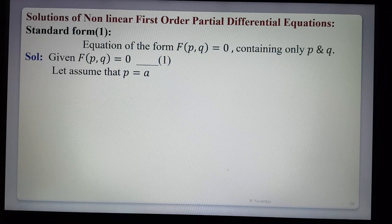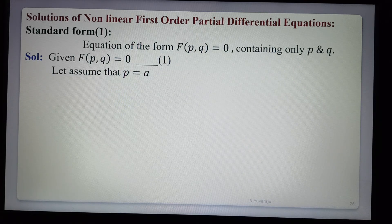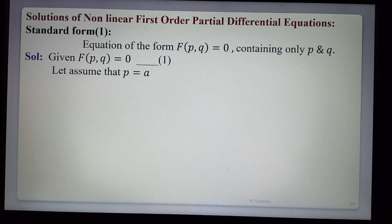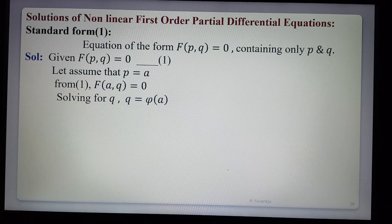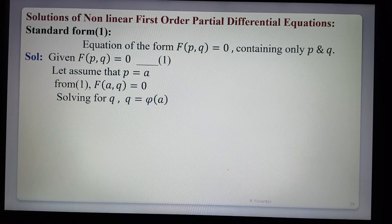We assume that p = a, where a is some constant. Here p = ∂z/∂x and q = ∂z/∂y. Substituting p = a into equation 1, we get f(a, q) = 0. Solving for q, we get q = φ(a), some function of a. So we have p = a and q = φ(a).